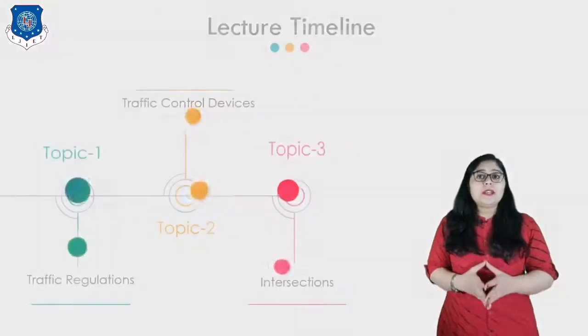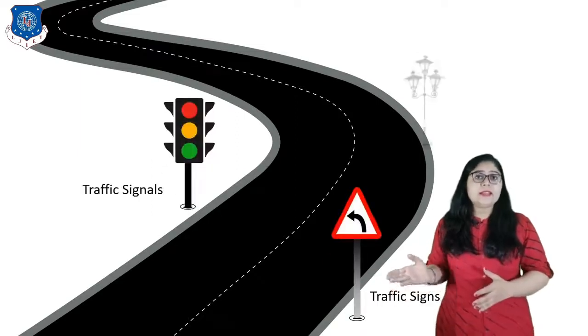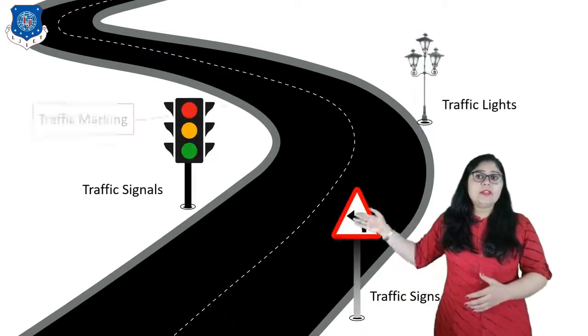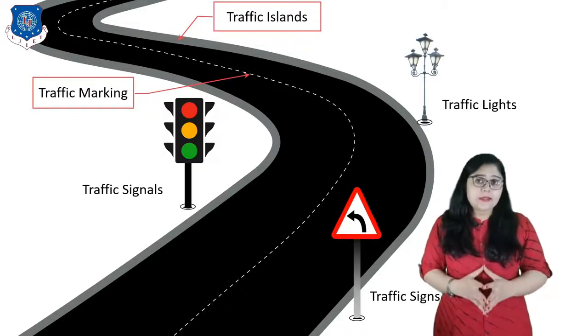Now let us move to our second topic for today's lecture which is all about Traffic Control Devices. The various aids and devices used to control, regulate and guide traffic may be called traffic control devices. Broadly, these fall into five categories: traffic signs, traffic signals, traffic lights, traffic markings, and traffic islands.